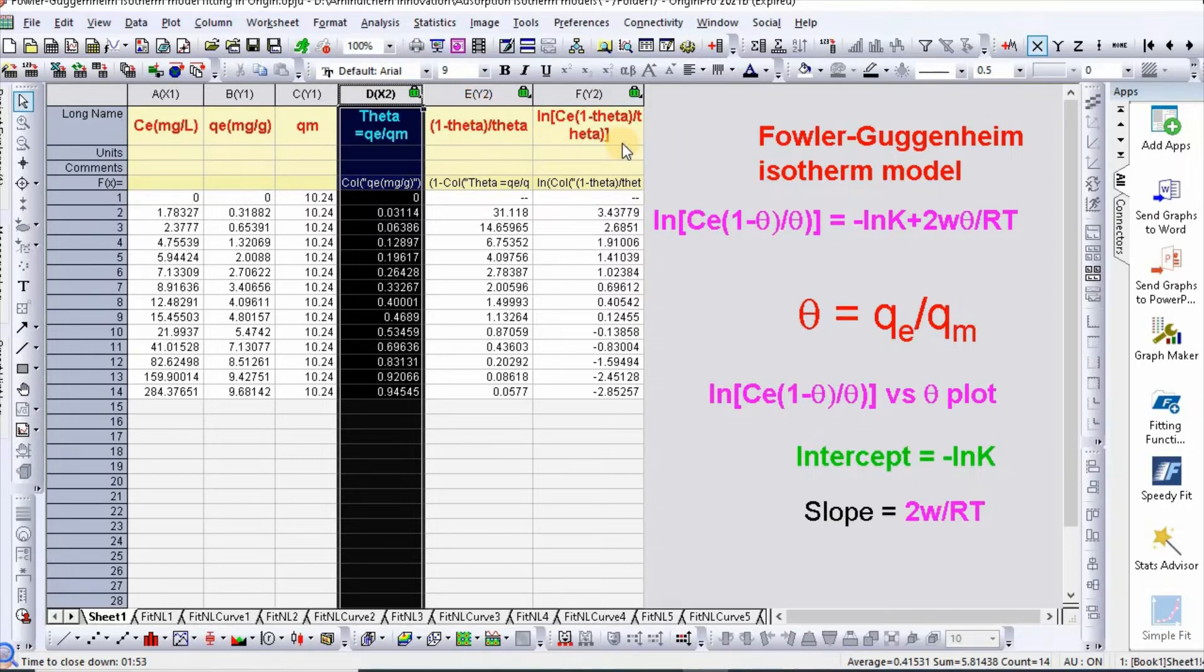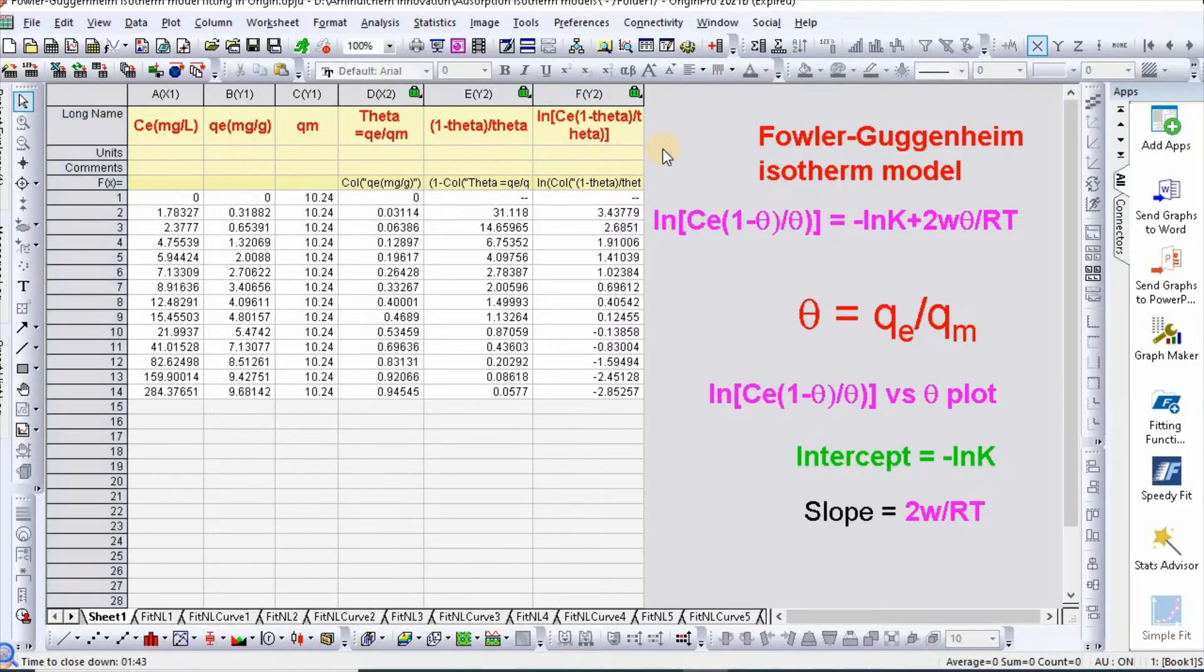Then you need to calculate ln[Ce(1-θ)]/θ. Just right click and set column values. Now you need to calculate ln(Ce).